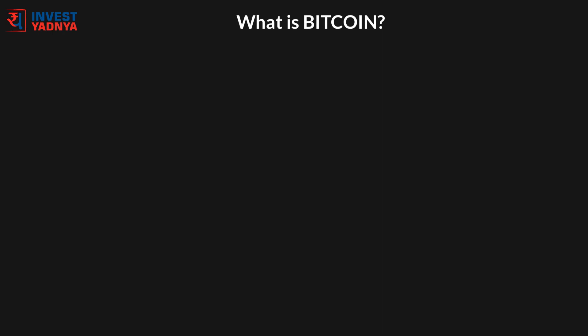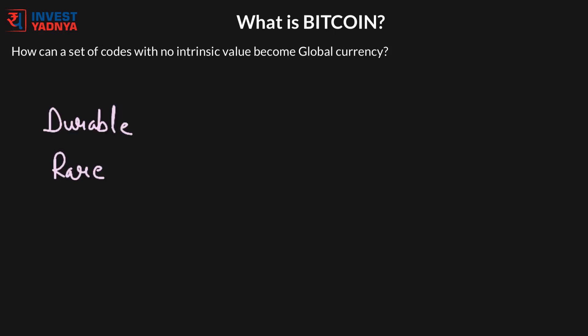An important question arises: how can a set of codes become a global currency? Before explaining that, let me explain what factors determine if a commodity or product can become a currency. A currency should be durable, rare, divisible and portable. If all these factors are satisfied, then that thing can become a currency. It started with precious metals, then currency notes today, and maybe Bitcoin in the future.